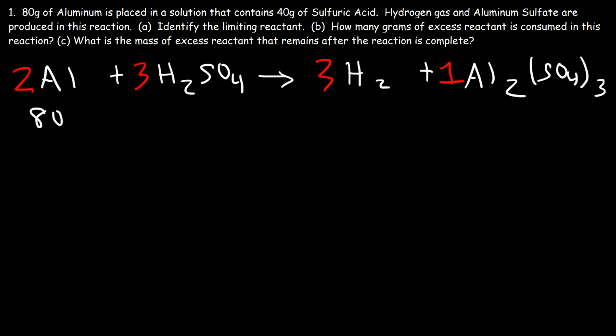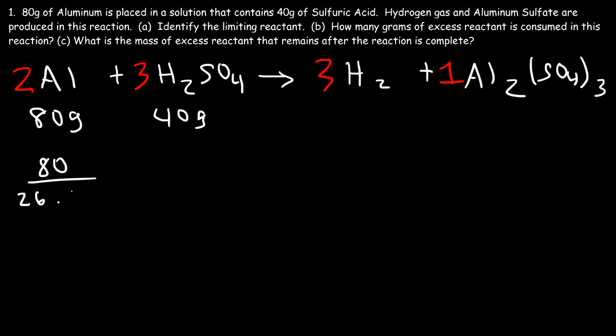So 80 grams of aluminum is placed in a solution that contains 40 grams of sulfuric acid. If we're given the grams of each reactant, how can we find the limiting reactant? To do so, take the mass and divide it by the molar mass. The molar mass of aluminum is 26.98, and dividing gives us 2.965 moles of aluminum.